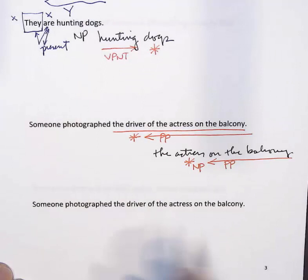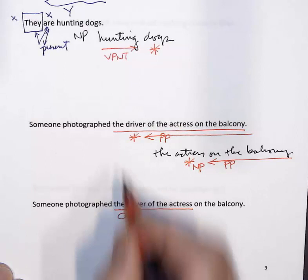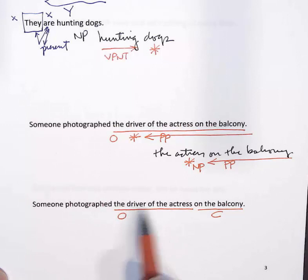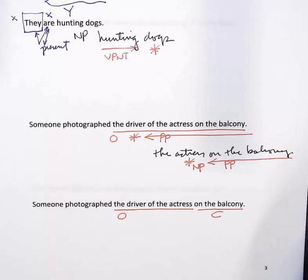The second interpretation: 'the driver of the actress' is the object, and 'on the balcony' is now the complement. So, someone photographed the driver of the actress, and the photograph was taken on the balcony. By thinking about the structure differently, we come up with quite a different meaning.